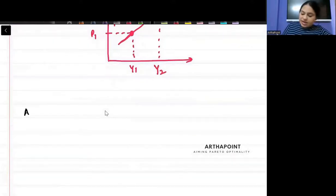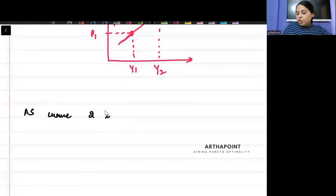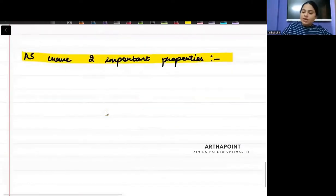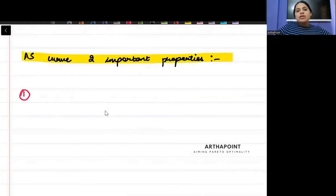So now, my AS curve has two important properties. There are two properties that your AS curve has. Property number one: the first property is related to what happens as the derivation of the AS curve. What is the movement around the AS curve?